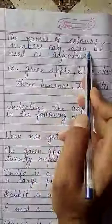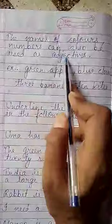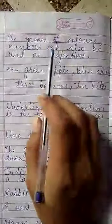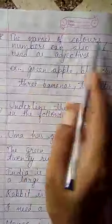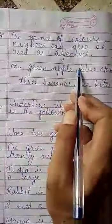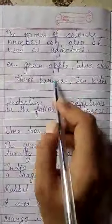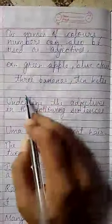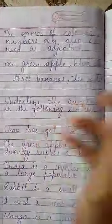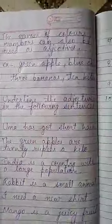The names of colors and numbers can also be used as adjectives — like green apple, blue clouds, three bananas, ten tickets, kites.